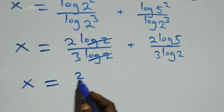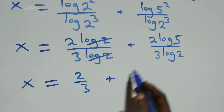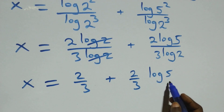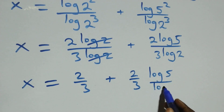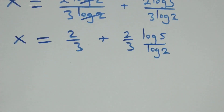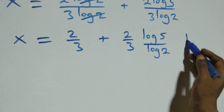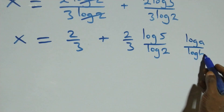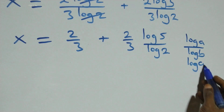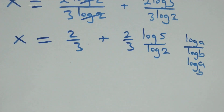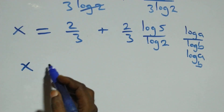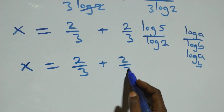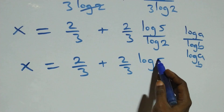So x equals 2 over 3 plus 2 over 3 times log 5 over log 2. We can write it as 2 over 3 plus 2 over 3 log 5 over log 2. Applying the change of base rule, where log a over log b equals log a to base b, this becomes x equals 2 over 3 plus 2 over 3 log 5 to base 2.